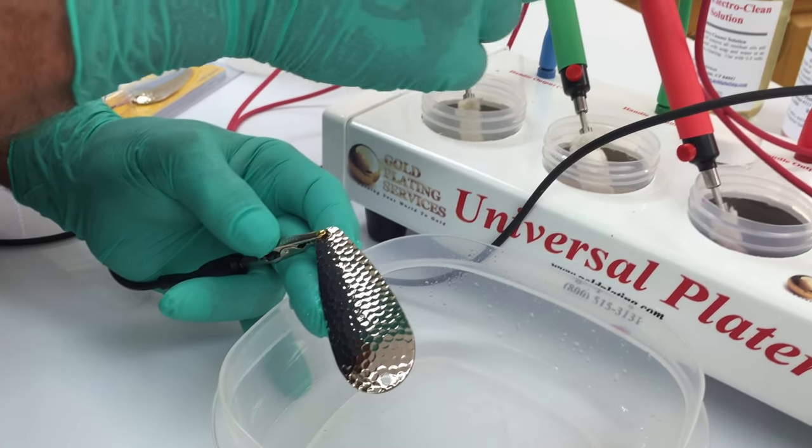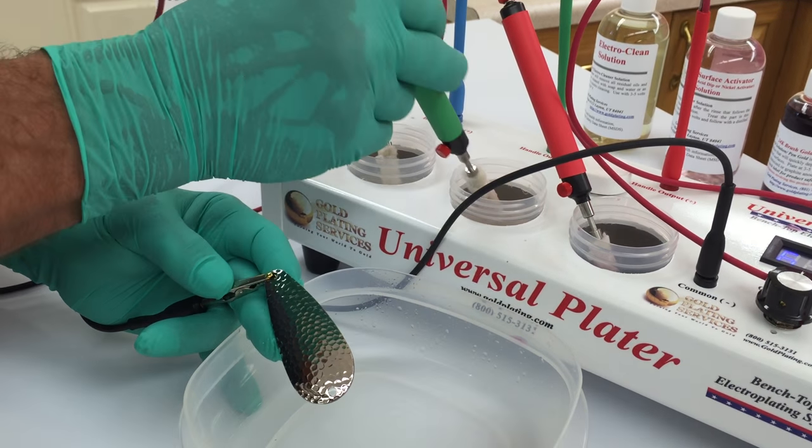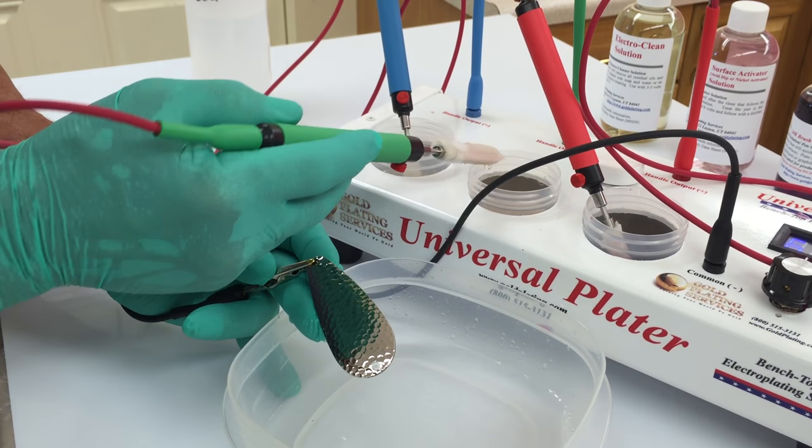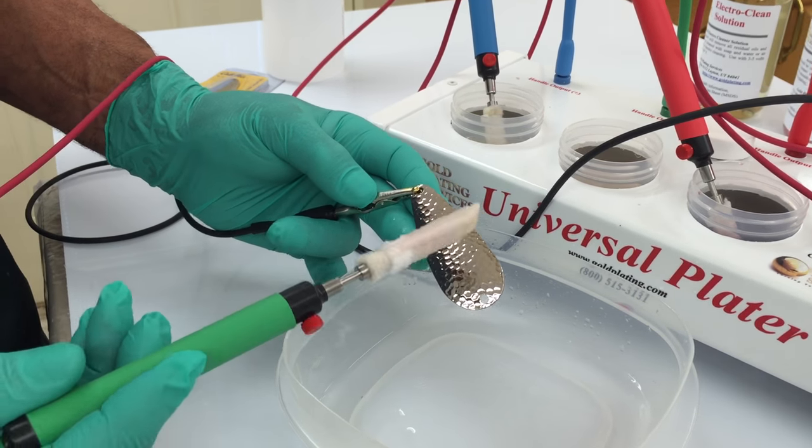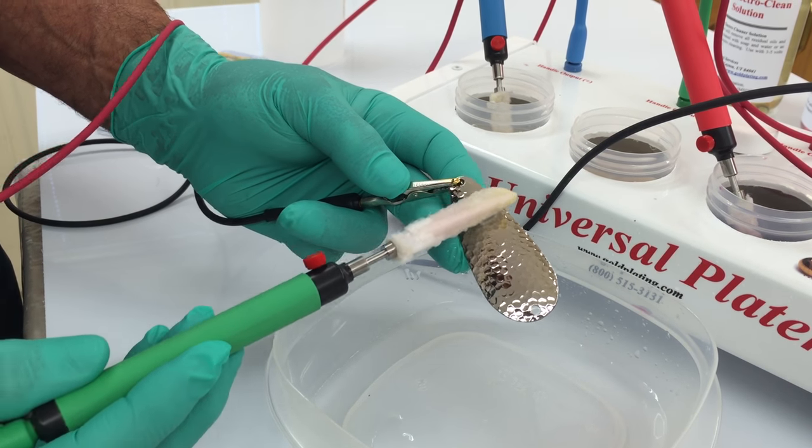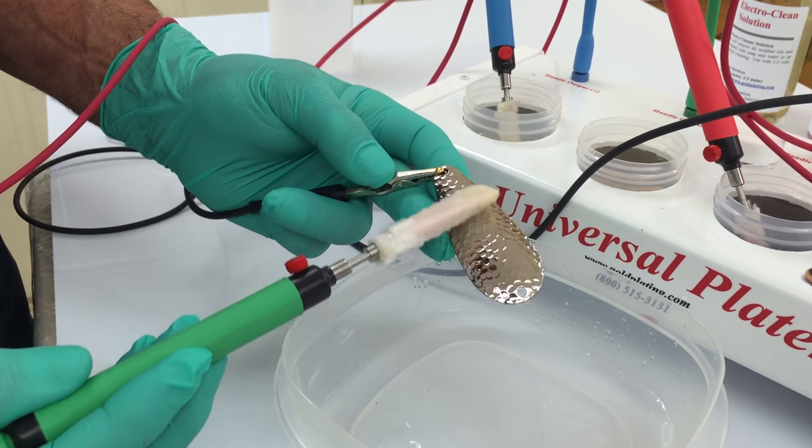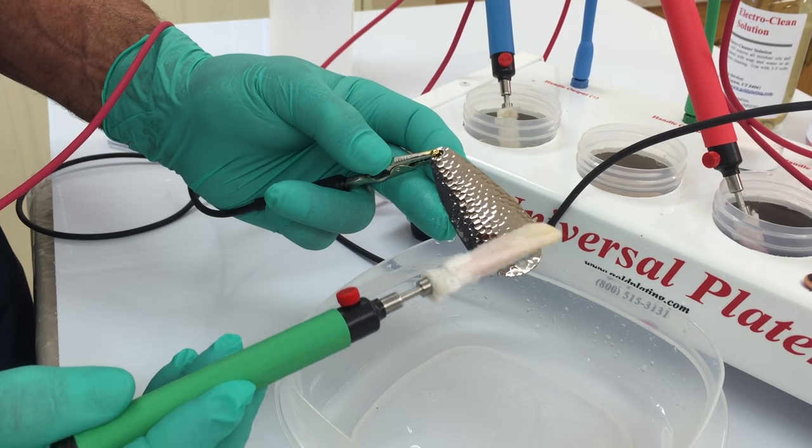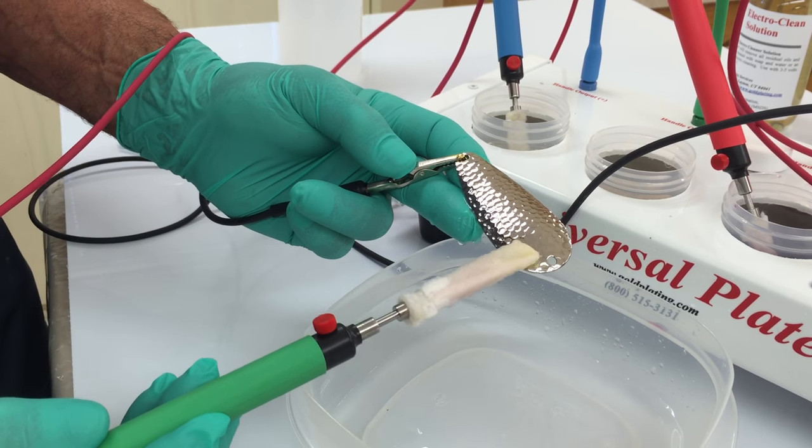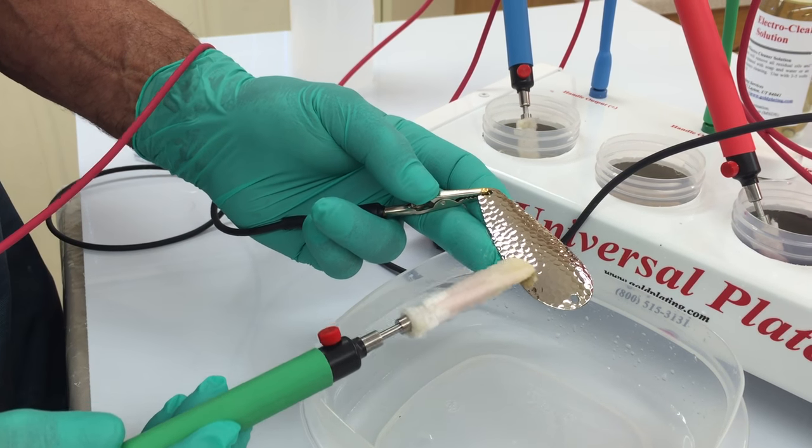For the next step, we're still going to leave the voltage the same. We're going to use our surface activator solution. The way to think of the activator is some people think of it as like a primer. Some people call it an etch. It doesn't really etch the surface, but it does remove any oxide, any material that would prevent adhesion.